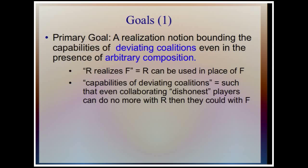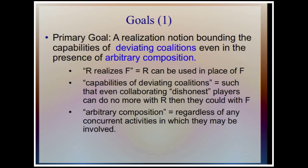Traditionally, we look at how deviating coalitions can influence honest parties. But in this work, we're also interested in how they can influence each other. We want that collaborating dishonest players can do no more — also with respect to each other — when they're in the R-hybrid world than when they're in the F-hybrid world.